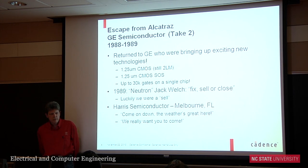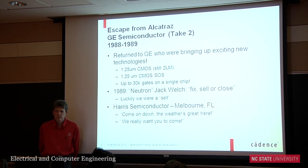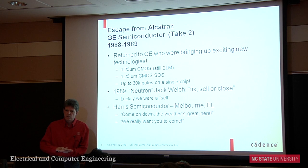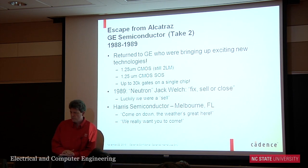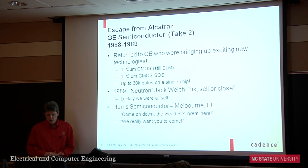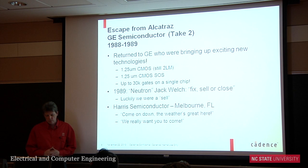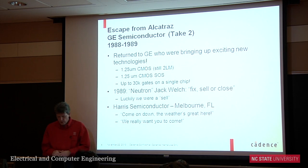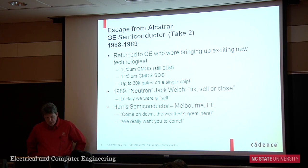They were doing exciting new technologies at GE — now 1.25-micron CMOS, still with two layers of metal. They were also doing silicon on sapphire: the wafers themselves had a sapphire substrate with silicon deposited on top to build the chip. It was similar to SOI technology but the wafers were actually translucent — a pinkish color, pretty cool to look at. We could now get up to about 30,000 gates on a chip.